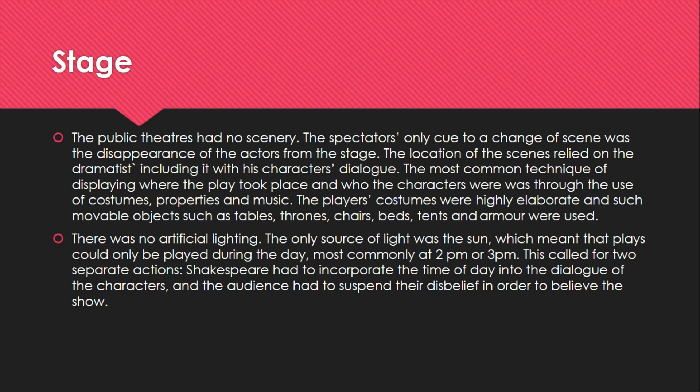Another feature about Elizabethan theater is that there was no artificial lighting — the only source of light in the theater was the sun. This meant that no play could be staged at night; all performances had to be done in the afternoon, commonly at 2pm or 3pm. This meant that when a playwright like Shakespeare had a scene set at night, they had to make a character say that it is actually night.